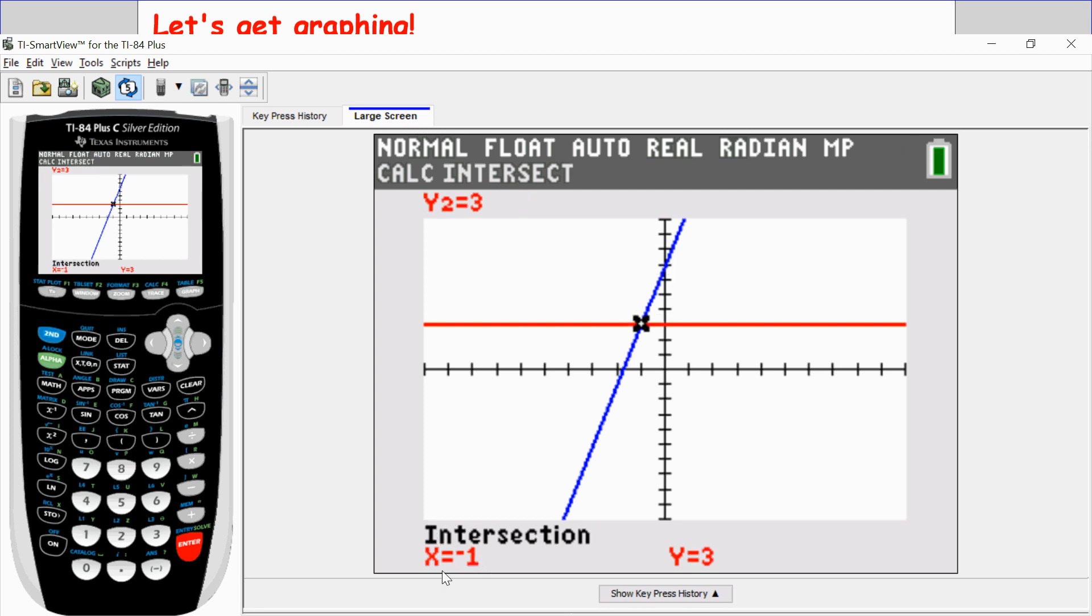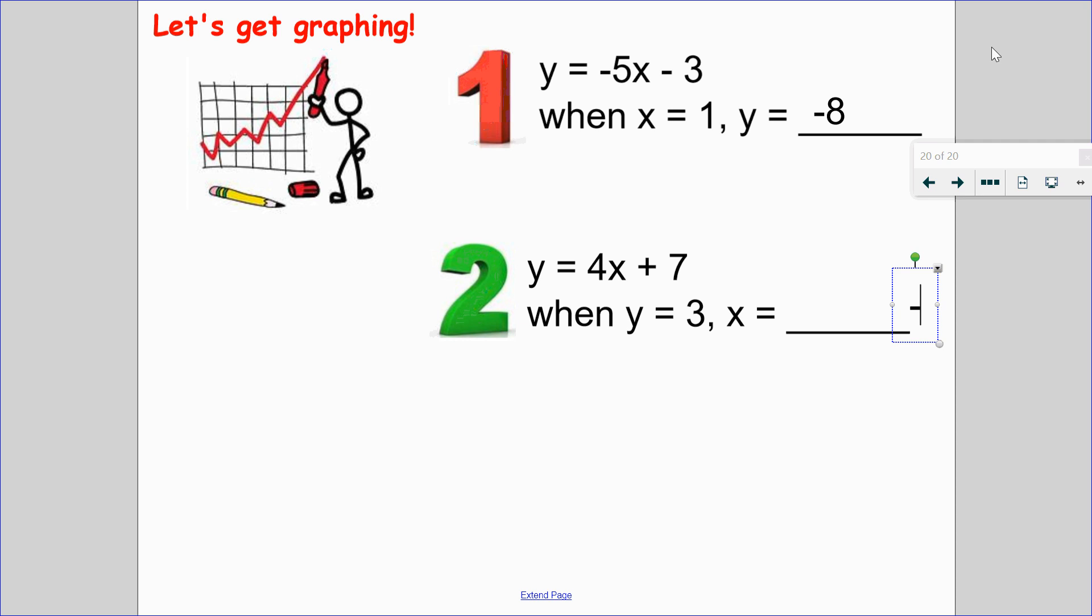And I see that my intersection point is negative 1 and 3. So when y equals 3, x is negative 1. And I'll just record my answer there as negative 1.